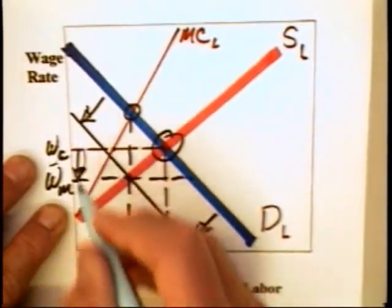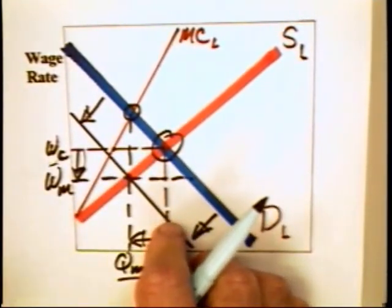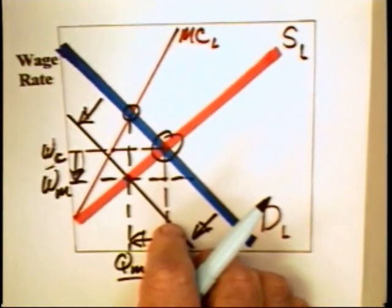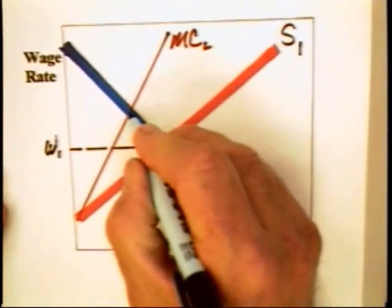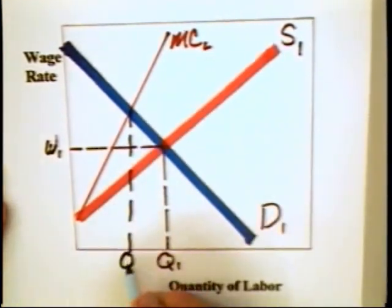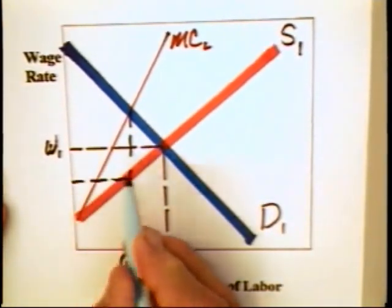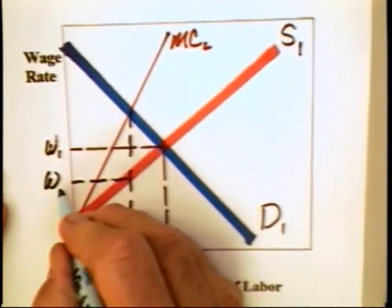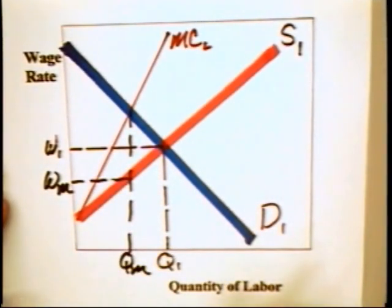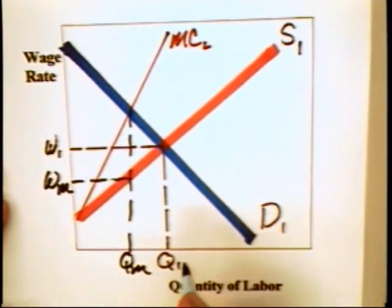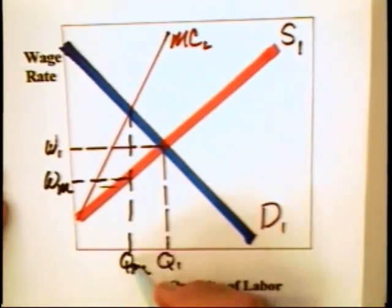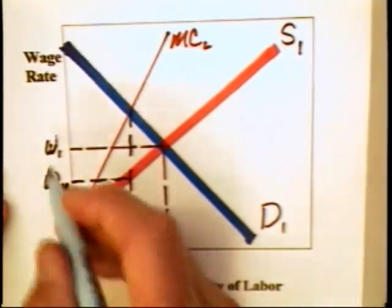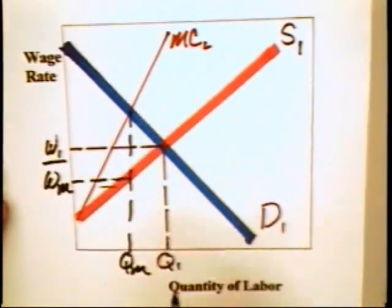One of the more interesting uses of the monopsony model is to go back and analyze the impact of the minimum wage. Here we have the monopsony hiring QM workers at a wage of WM. Now, let's suppose that the government comes in and says that this is wrong, WM is too low a wage for these workers, and that the employers must pay a wage of W-1. That's the minimum wage.